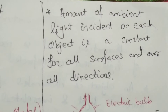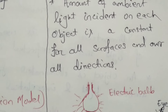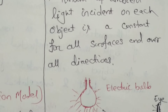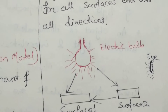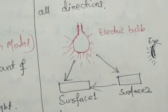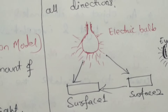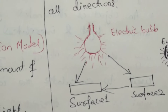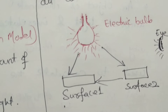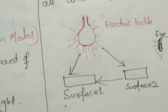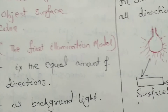The amount of ambient light incident on each object is a constant for all surfaces and over all directions. Here you see it is an electric ball with different surfaces — surface 1 and surface 2. Light from the ball comes equally in all directions and is projected on surface 1 and surface 2. From surface 2 it is again reflected and comes to surface 1, where there is an observer. This is called ambient light.